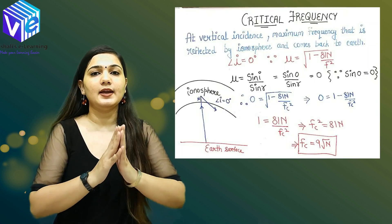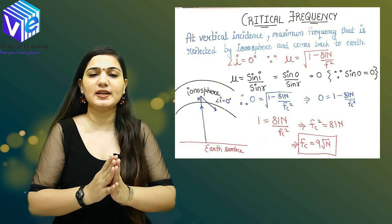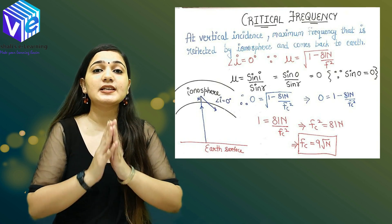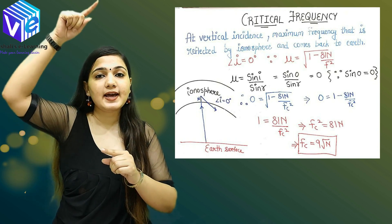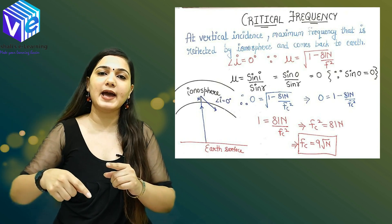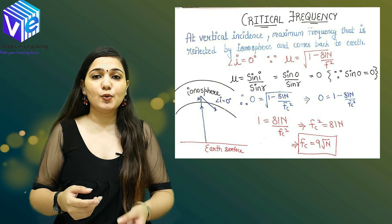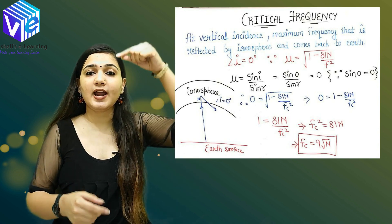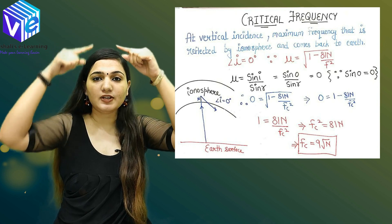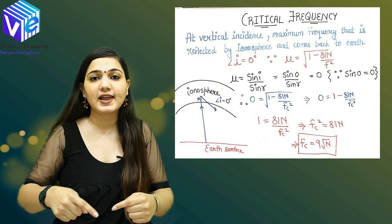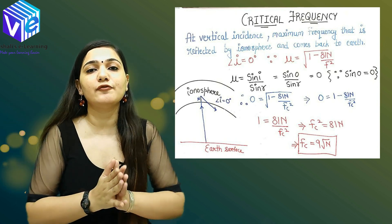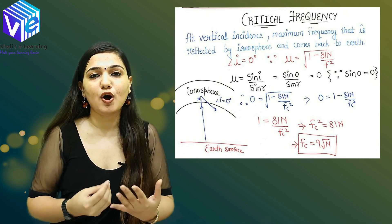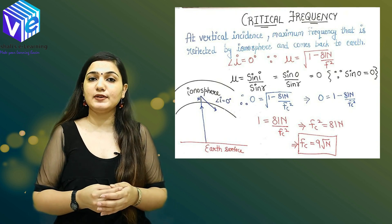Now we are starting with critical frequency. It is the maximum frequency of the wave which is incident in the vertical direction that will reflect back from the ionosphere. So when I project a wave in the vertical direction, the maximum frequency with which it will reflect back is the critical frequency. I have already derived the formula of refractive index in my previous video.